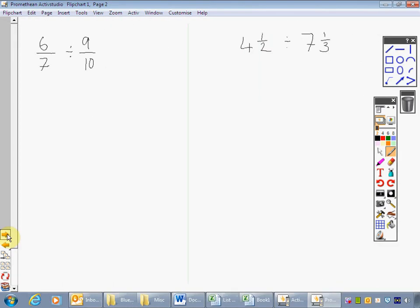I've got an example here for you. When we're dividing fractions, we're going to remember sharing out the Kentucky Fried Chicken. Kentucky Fried Chicken. KFC. Keep it. Flip it. Change it. And that refers to... Keep the first one. Flip the second. And then change the sign to a multiply.